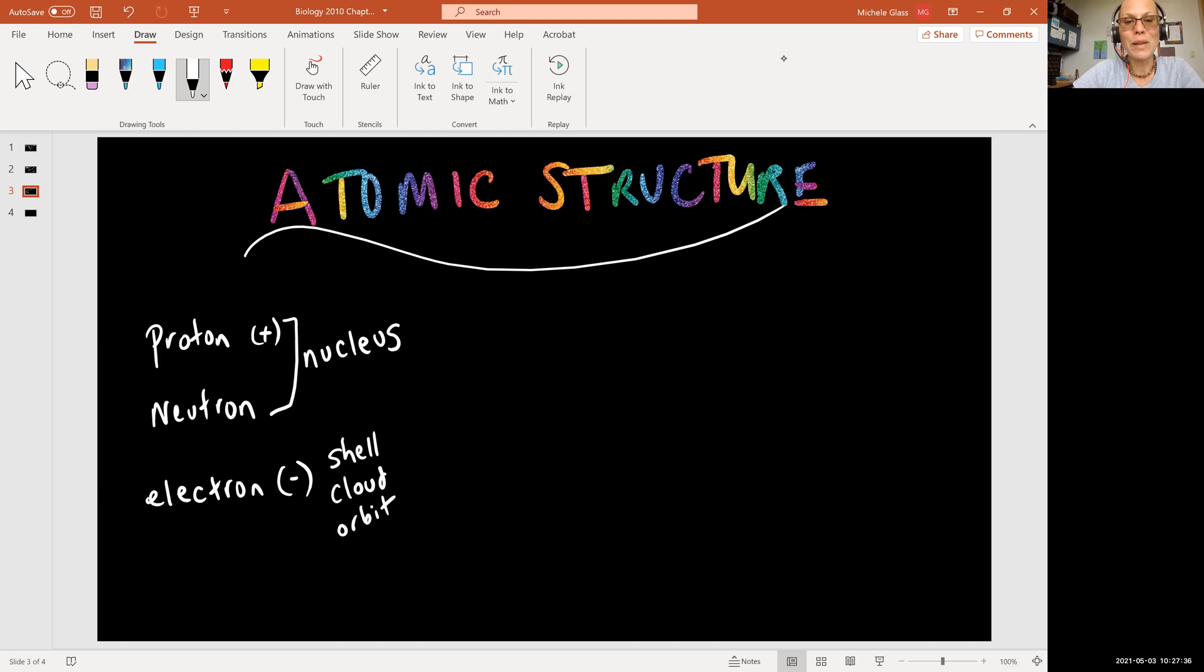Now, if we're truly being just full-on chemists, we're going to be very specific about these definitions. They're going to have slightly different meanings, whether it's a shell, a cloud, or an orbit. But we're only being like kind of chemists, right? Because we're doing this in the context of human anatomy and physiology, and we don't have to be that particular. So for us, we can think of the shell, the cloud, and the orbit as sort of synonyms, synonymous terms.